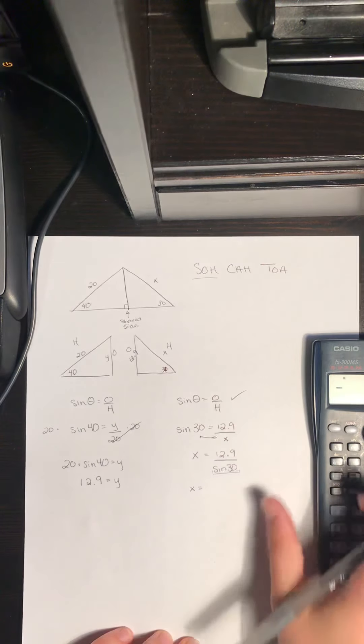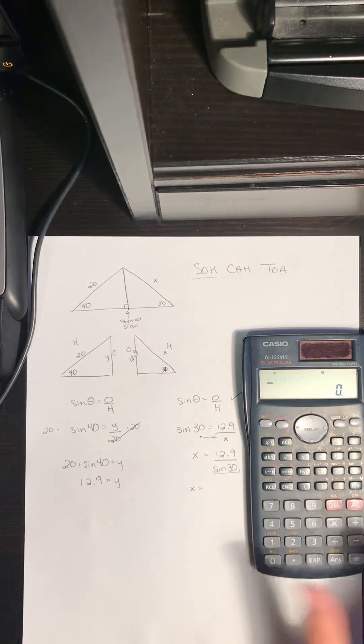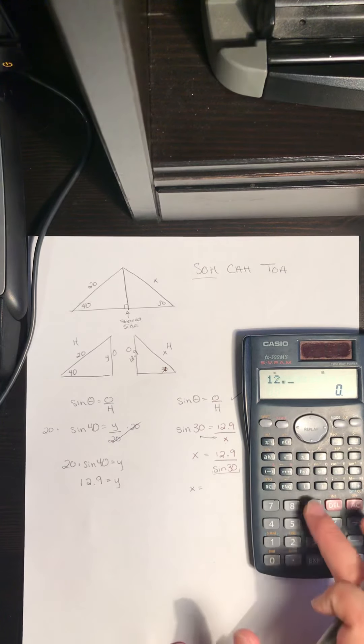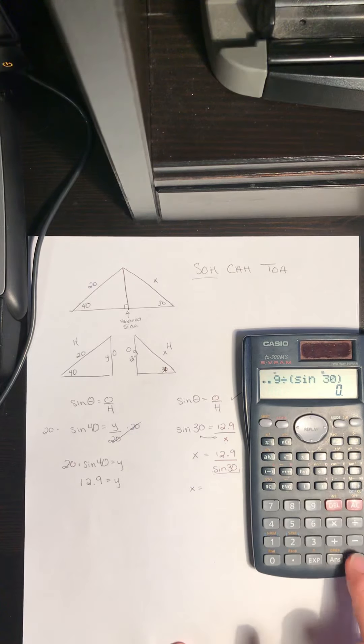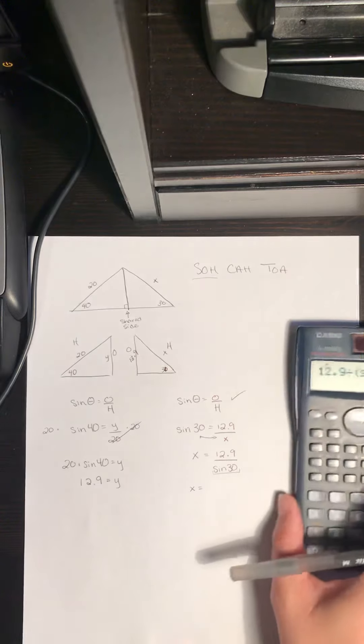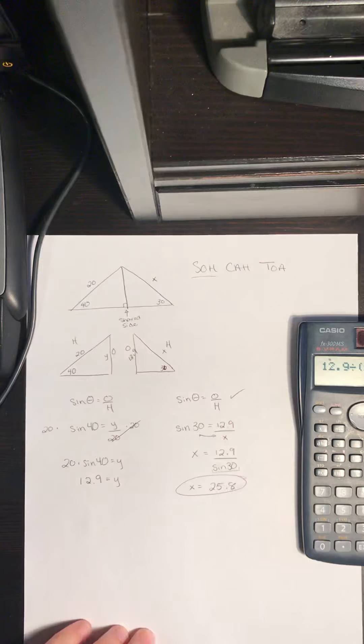You really need to practice with your calculator. It's the hardest part of this. You need to get familiar with your own calculator. So I can type 12.9 divided by sine 30 in brackets there and I get 25.8 as my final answer.